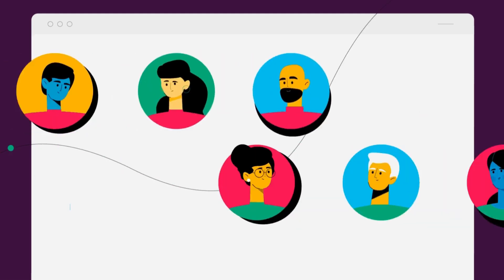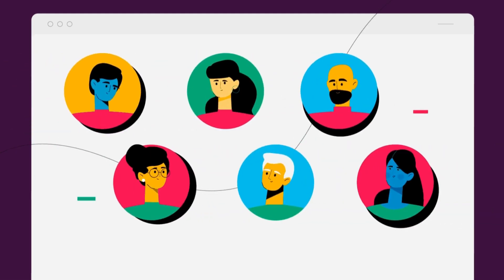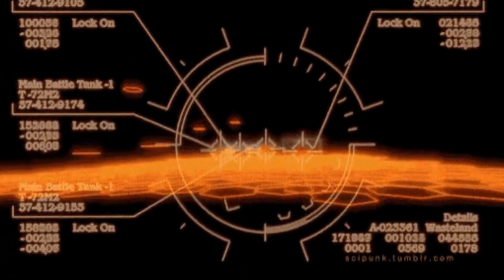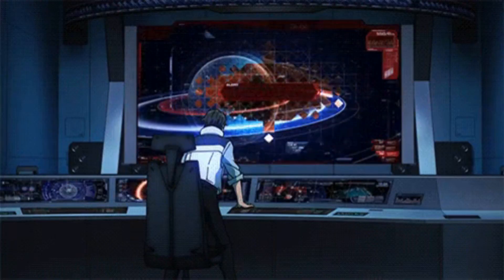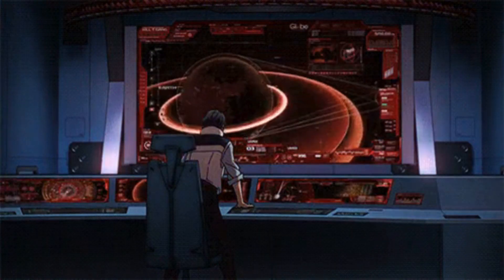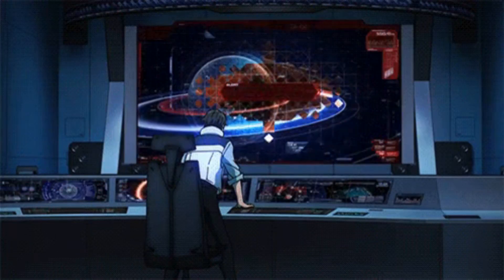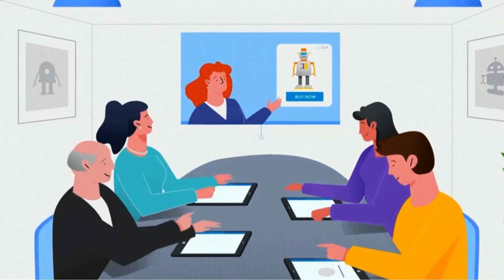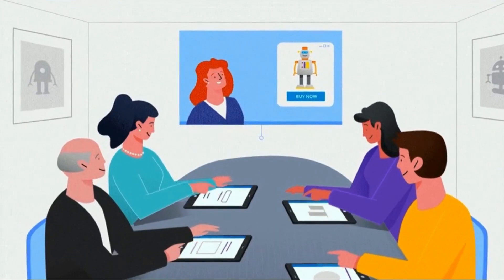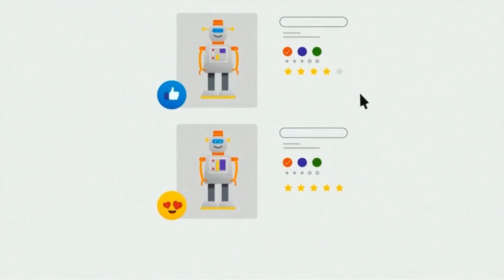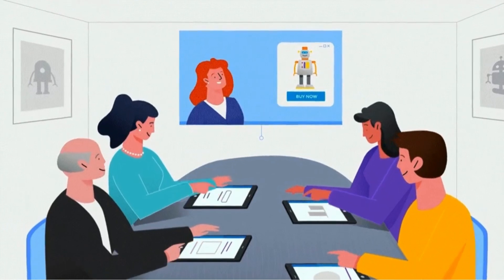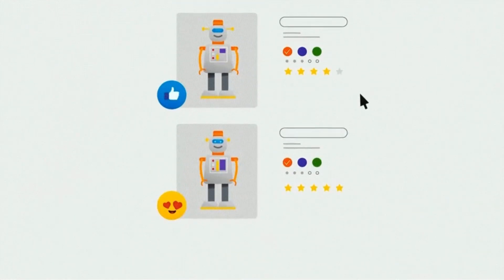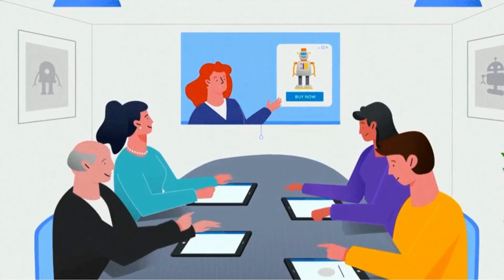Multi-stage attack unveiled: the attack orchestrated by the Vulcan Cyber Voyager 18 research team consists of three distinct but interconnected stages, highlighting the cunning tactics employed by malicious actors.